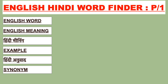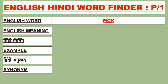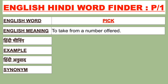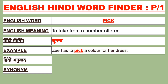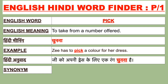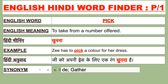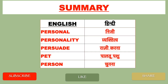Our next English word is 'pick'. The English meaning of pick is to take from a number offered. Pick ka Hindi meaning hai 'chunna'. For example: She has to pick a color for her dress. Isi Hindi mein bolenge: Use apni dress ke liye ek rang chunna hai. Synonyms of pick are decide and gather.